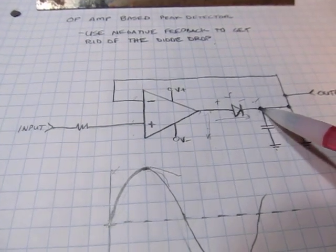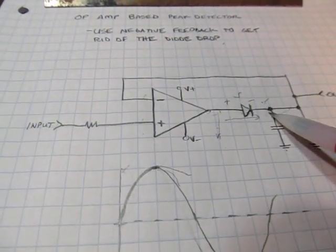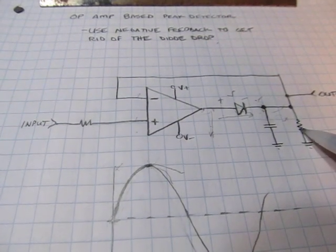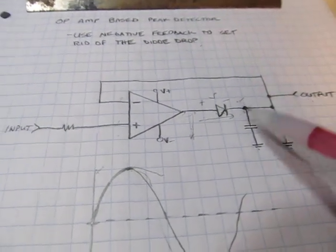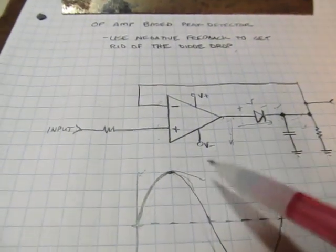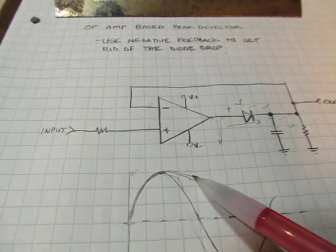So the voltage here is now just going to be whatever was left on that cap and whatever is discharging through the resistor or the load. So we're going to get that same kind of a droop.